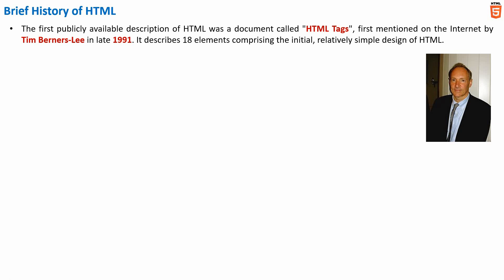Talking about the versions of HTML, HTML 1.0 was released in 1993 with the intention of sharing information which can be reusable and accessible via web browser. But as not many developers were involved in creating websites, this language was not growing much at that time.